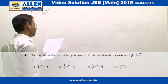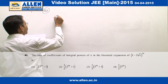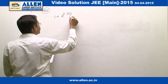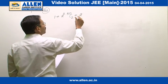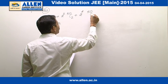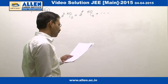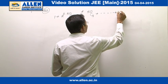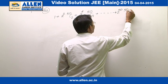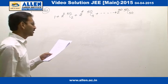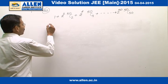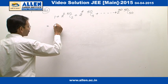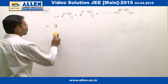The sum of coefficients of integral powers of x. Let us write down the expression. It will be the first term, then the third term: 2 squared times 50C2, then 2 to the power 4 times 50C4, plus and so on. The last term will be 2 to the power 50 multiplied by 50C50. We need to find the sum of this expression. We know all these terms are contained in the expansion of 1 plus root 2, raised to the power 50.